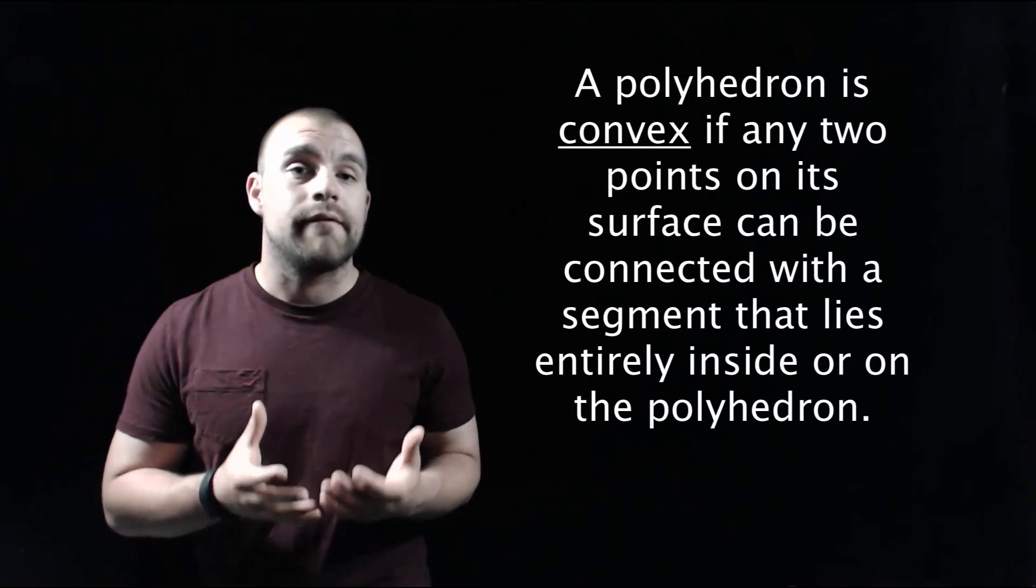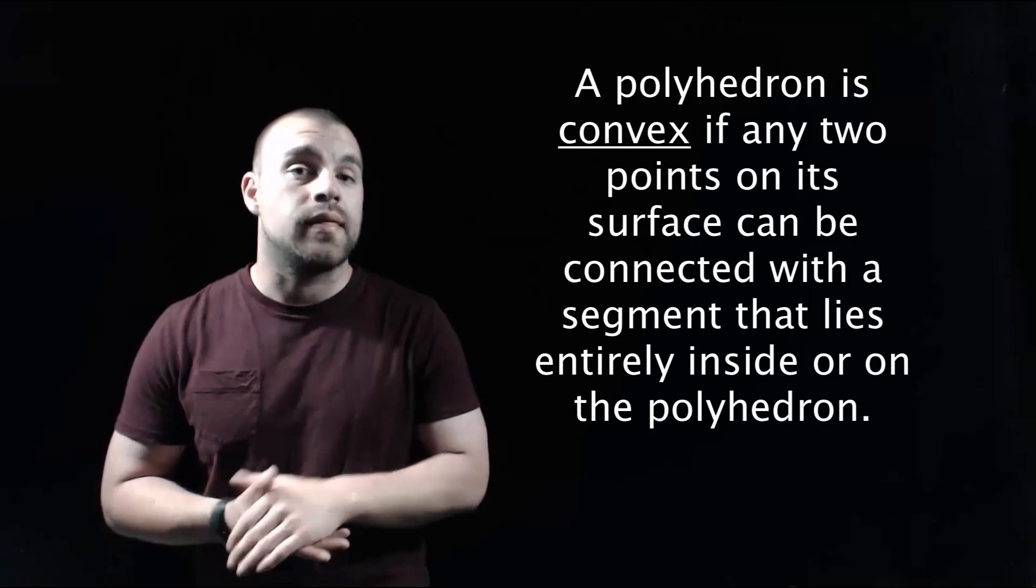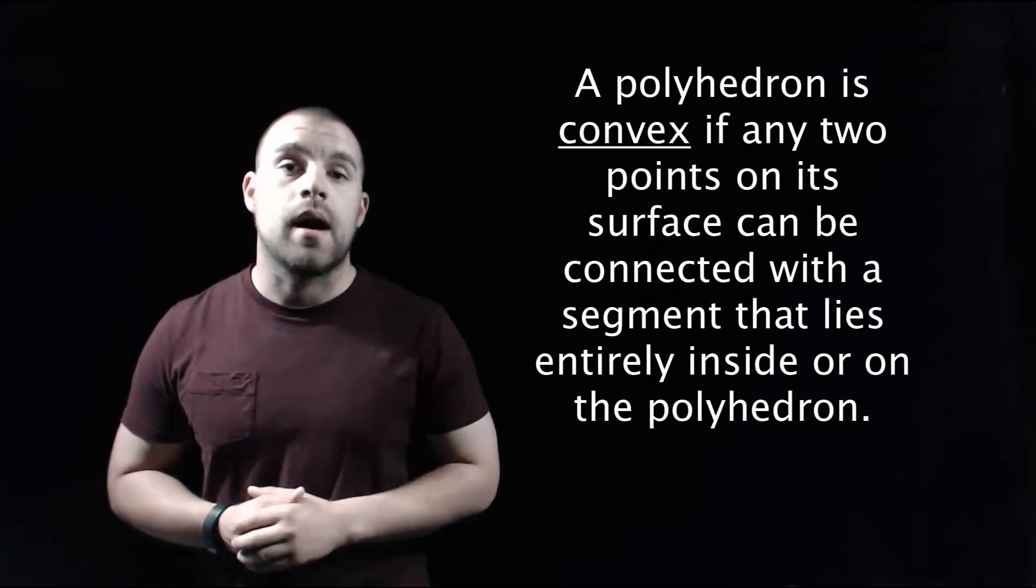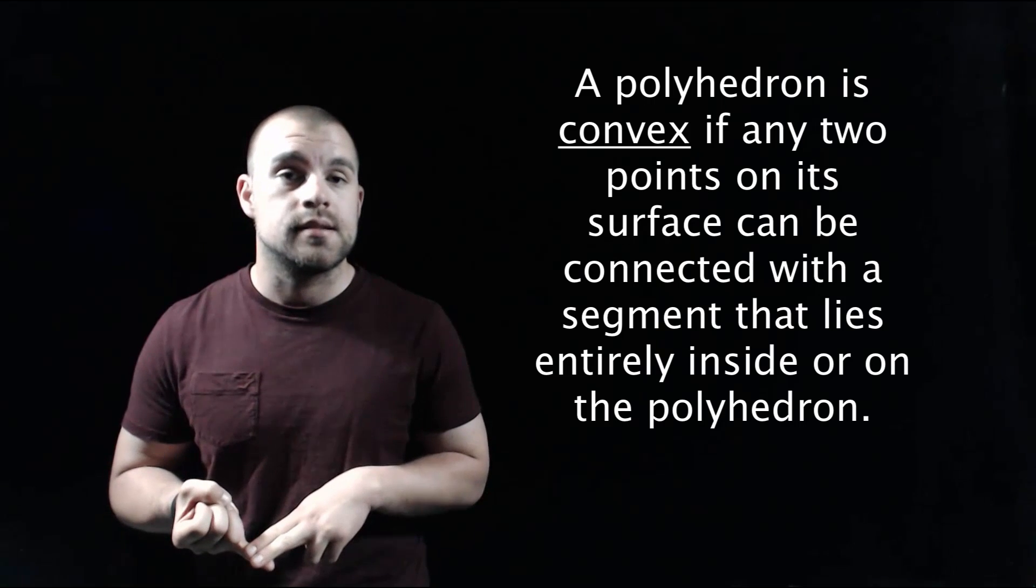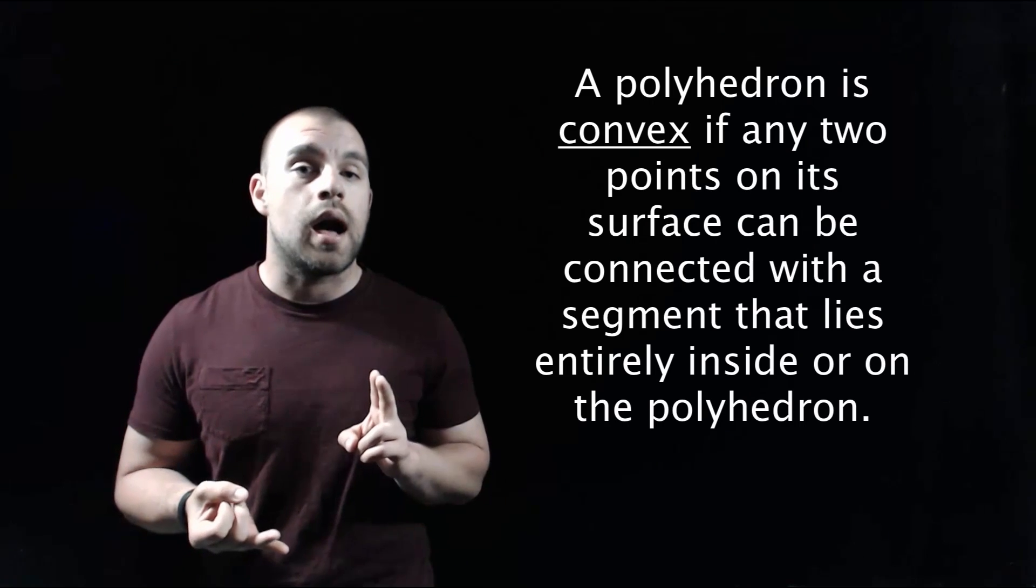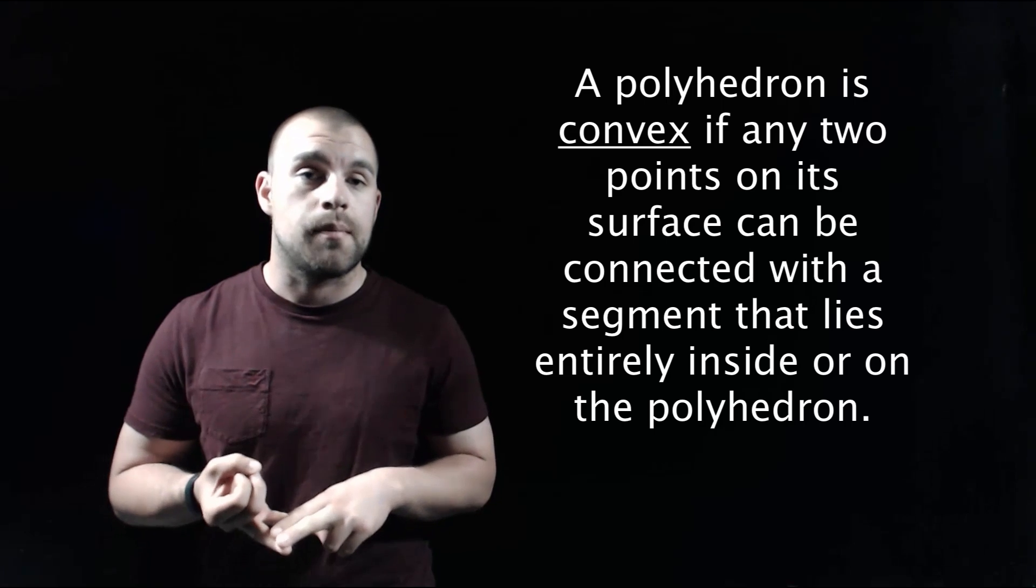The first thing we're going to look at is the idea of a polyhedron either being convex or concave. So a polyhedron is convex if any two points on the outer surface of the polyhedron can be connected with a line segment that is either fully inside of the polyhedron or on the outer surfaces of the polyhedron itself.